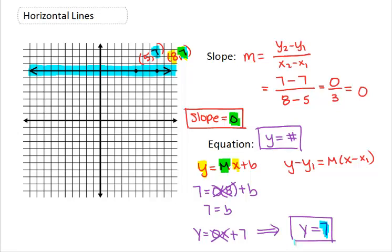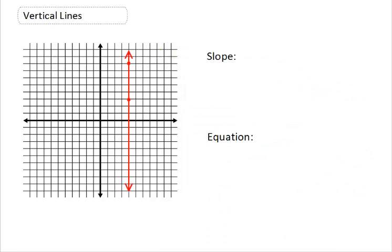Hopefully we can take this information and interpret it when you're trying to figure out how it works for vertical lines. Go ahead and pause the video and see if you can figure out the slope and equation for all vertical lines. In this example, the points I have randomly picked are (4, 3) and (4, 8).